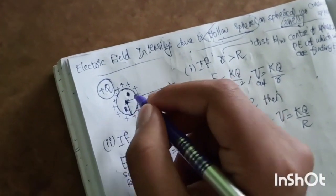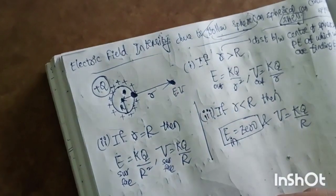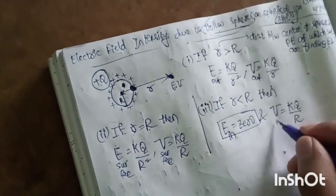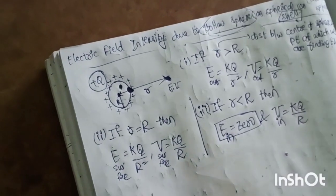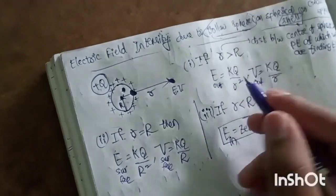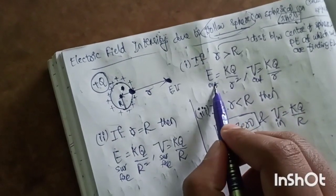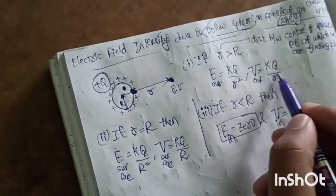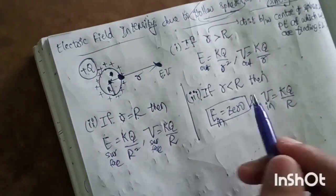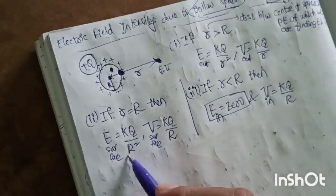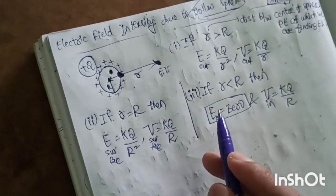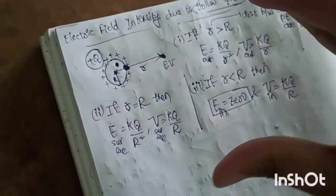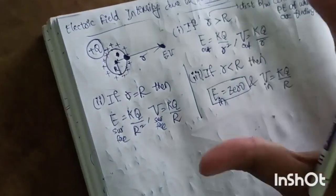For V inside the hollow sphere, V equals kq by R — where capital R is the radius of the sphere. If the point is outside, use the respective r values. This is the situation for the hollow sphere cases.